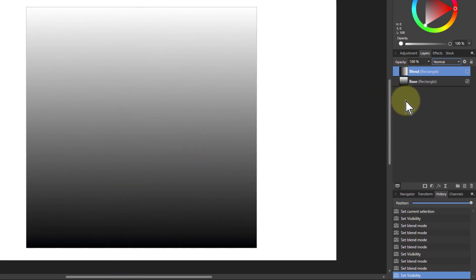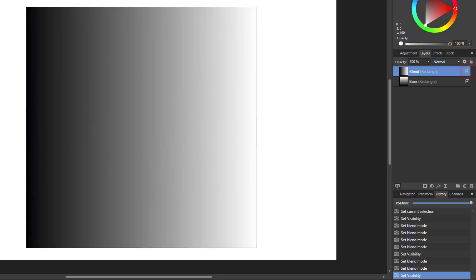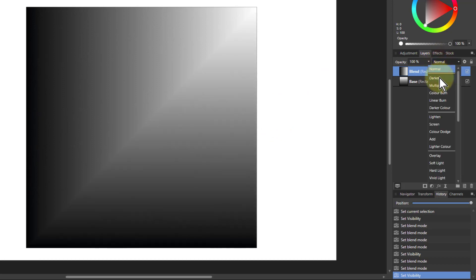So we've got Affinity Photo with two layers here. We've got the base layer, which is going from black up to white here. And the blend layer here, going from black to white here, from 0 to 1. So when we put the blend mode onto that, the darken blend mode, you get that L-shaped effect.